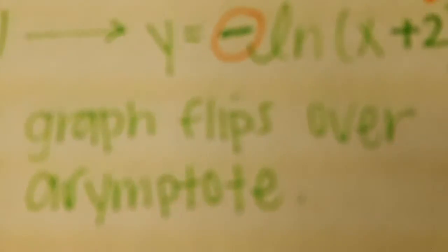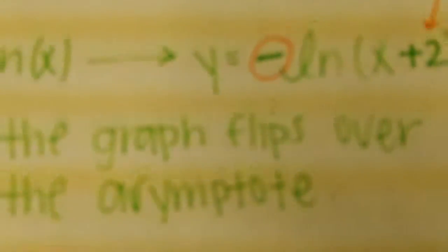And the new formula would be negative ln of x plus 2. And the negative goes in front of the ln because it is flipped vertically. And then the plus 2 is opposite of what you would think because you have left 2, and it flips over the asymptote.